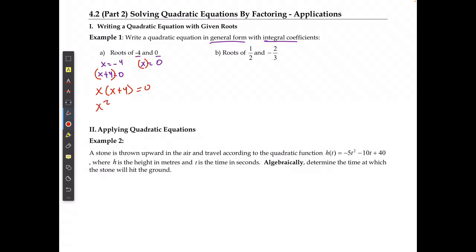x squared plus 4x equals 0. There's my general form equation with no fractions or just integers that would give me these roots.